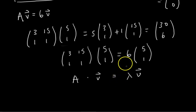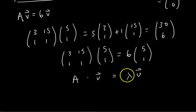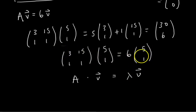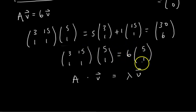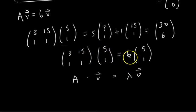Following this straightforward process, we found the eigenvalues are 6 and negative 2. For lambda equals 6, we found the eigenvector V = [5, 1]. The eigenvector [5, 1], when multiplied by A, gives 6 times [5, 1]. We were able to verify that.